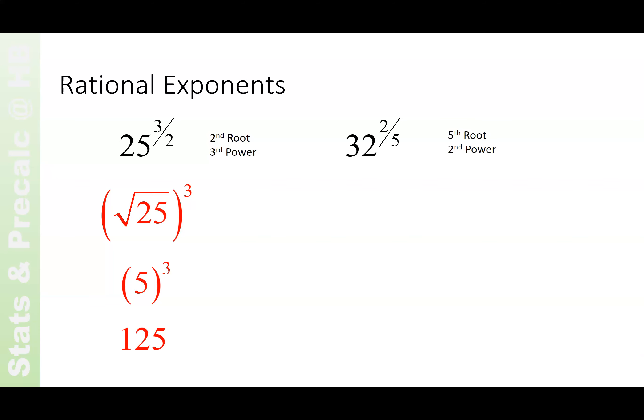32 to the 2 fifths, that's asking you for the fifth root and the second power. So you look for the fifth root of 32, take that to the second power. The fifth root of 32 is 2, of course. Squared is 4, and you are good to go.